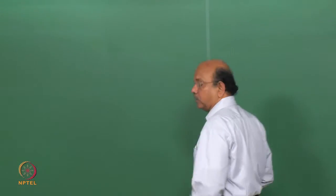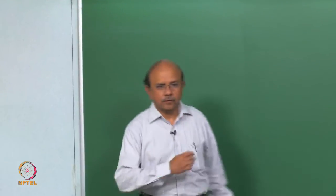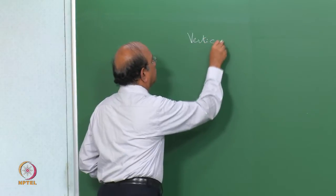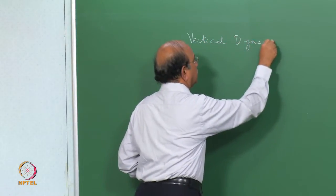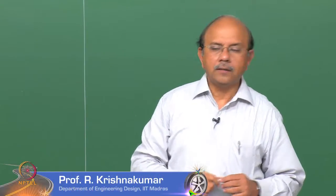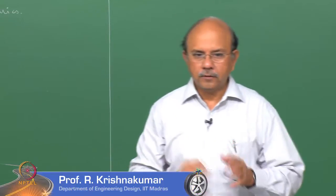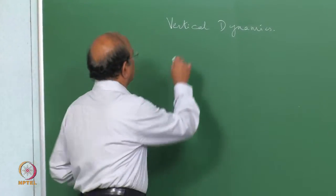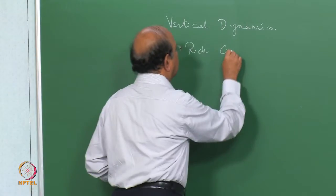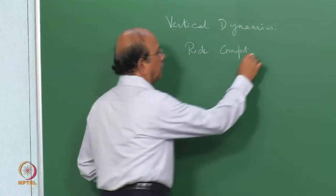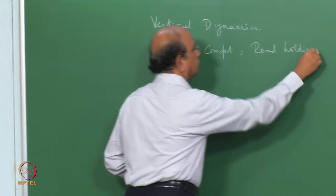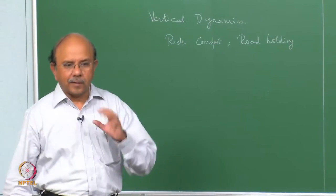We started looking at vertical dynamics, and that is what we are going to do for the next 5 or 6 classes. We already noted that there are 2 important things in vertical dynamics that we have to look at: one is what we call ride comfort, and the other is what is called road holding.